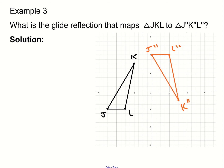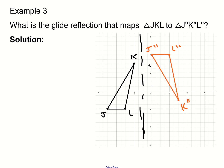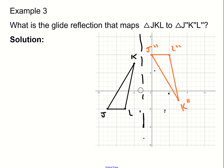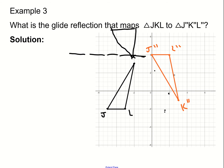Let's look at a glide reflection example. We want to go from triangle JKL to triangle J double prime, K double prime, L double prime. There is some kind of reflection going on here. It's definitely not going to be a reflection about a vertical axis — if it were, it would end up looking like the mirror of the original, which is definitely not the orange shape given. So it's probably going to be a reflection about some kind of horizontal axis, so that when we reflect it, it ends up looking like the orange triangle.